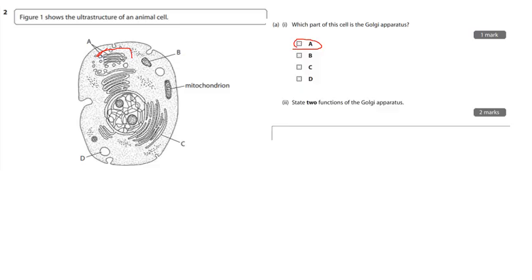State two functions of the Golgi apparatus. Mainly, it is, here's my answer, it receives proteins from the ER, it modifies them, it sorts them, it packages them into vesicles, and then it sends them off to other places. So, it's like the post office, it receives these proteins, it packages them, and then it sends them off. That's probably worth two marks, but I'll put also, it produces lysosomes as well, just to get me money's worth.